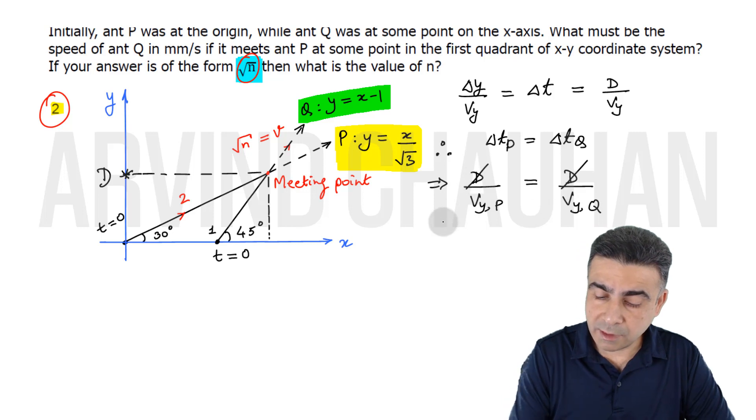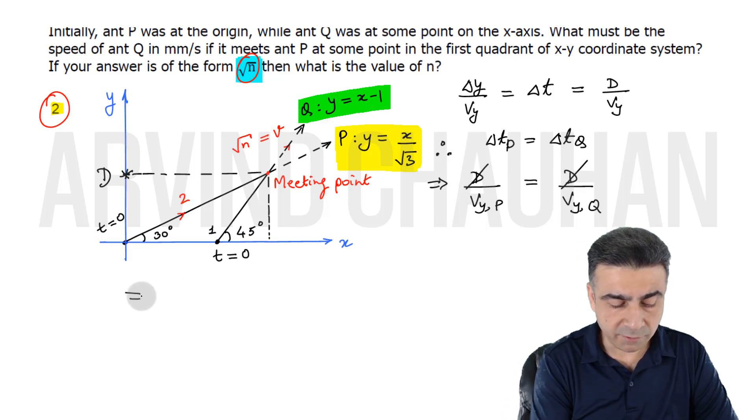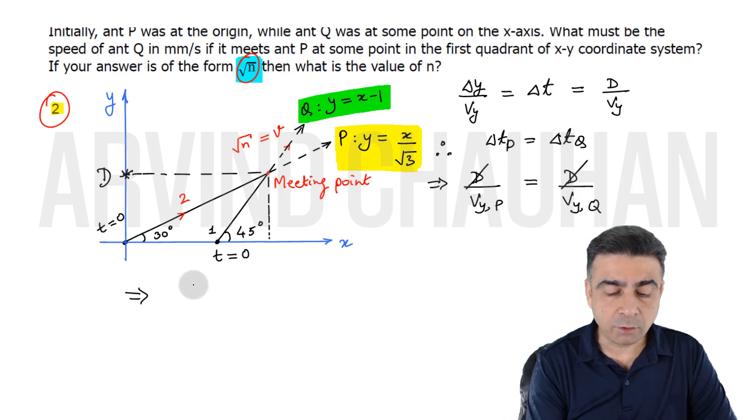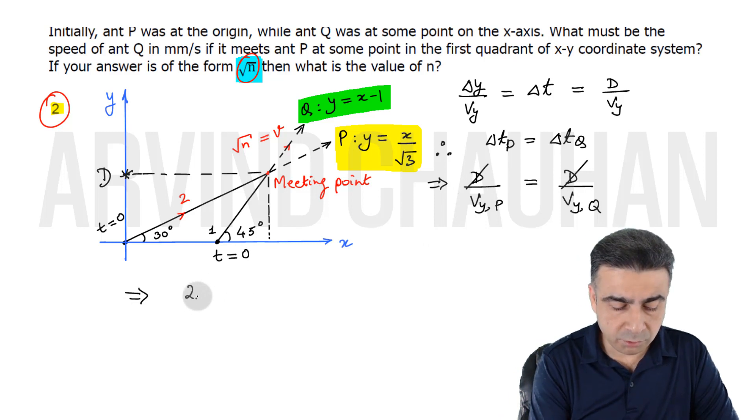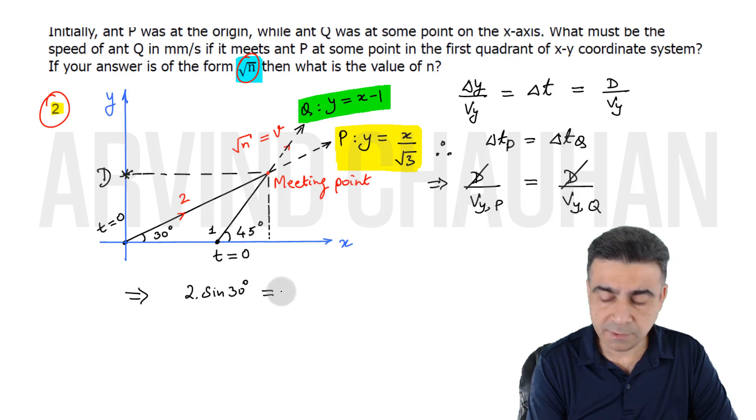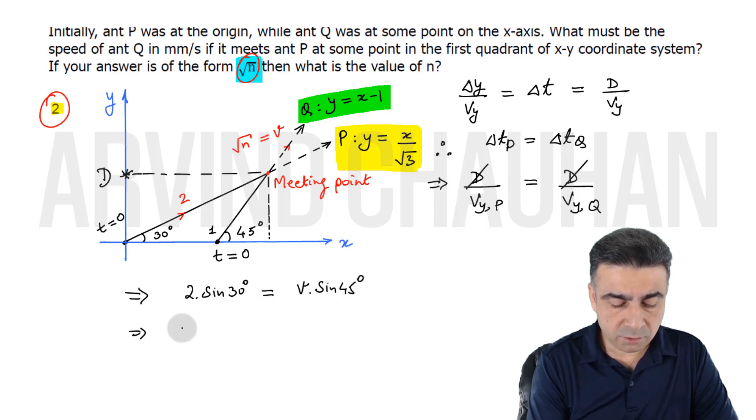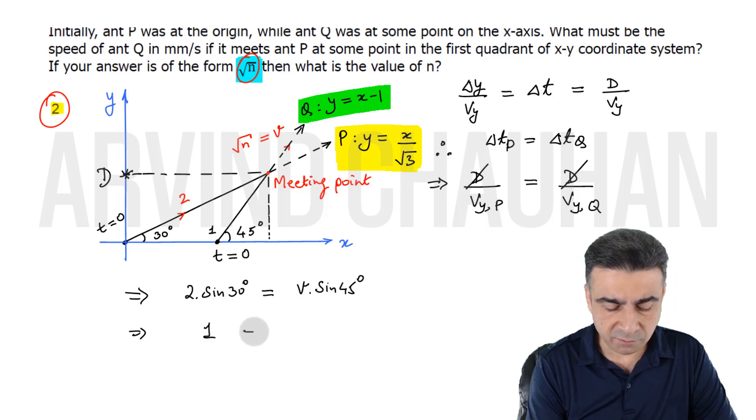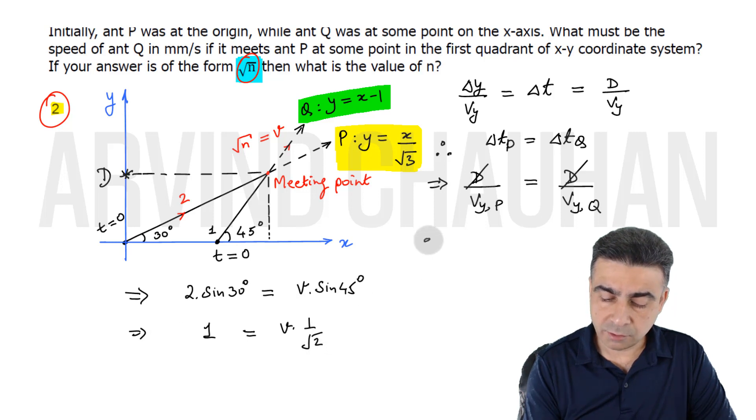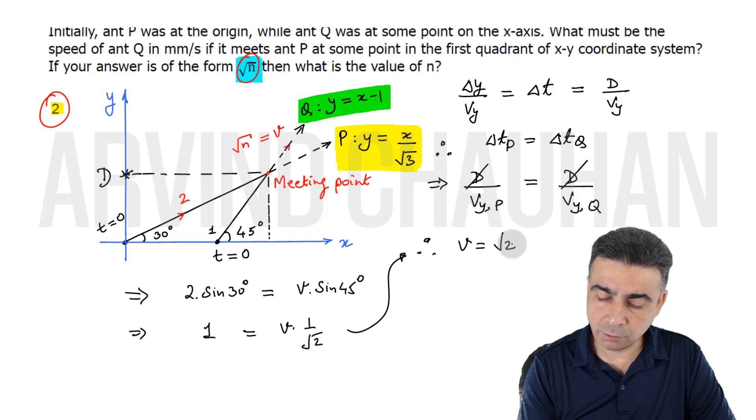D cancels out and we are left with the y-component of velocity of ant P, which is 2 sine of 30 degrees, must equal the y-component of velocity of ant Q, which is V times sine of 45 degrees. Sine 30 is half, so the left side becomes 1. This is V times 1 by root 2. Therefore, we get V equals square root of 2.